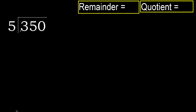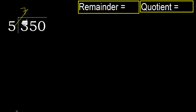350 divided by 5. 3 is less, therefore next. 35 is not less, therefore with 35: 5 multiplied by which number is nearest to 35 but not greater? 5 multiplied by 8 is 40 — 40 is greater. 5 multiplied by 7 is 35 — not greater. Subtract, remainder is 0.